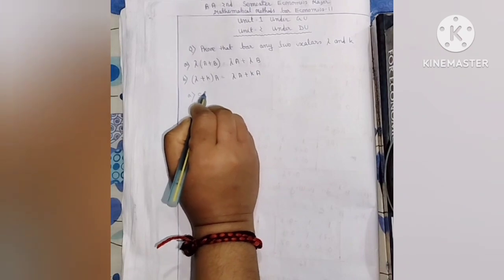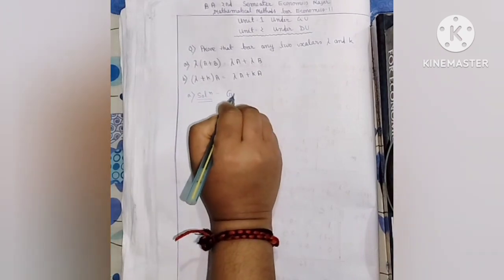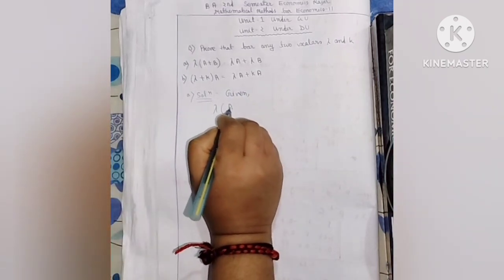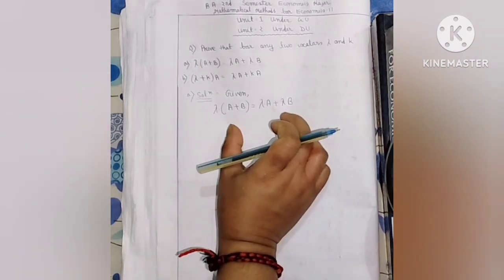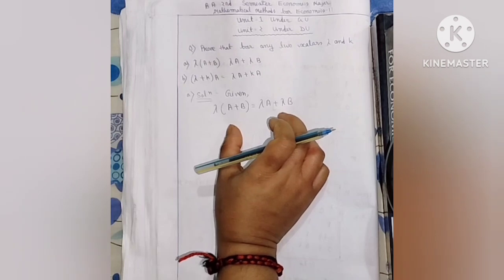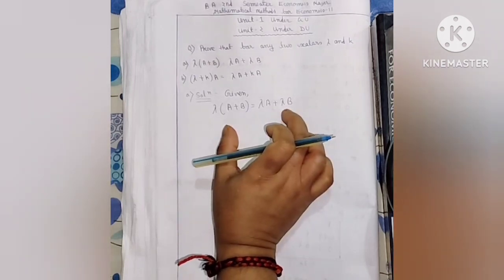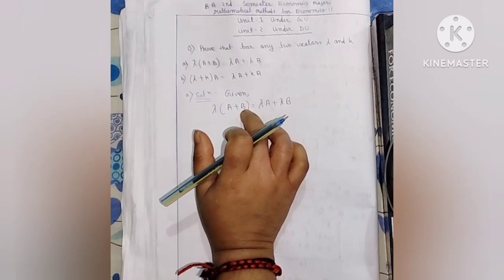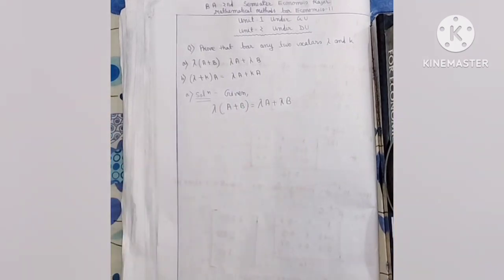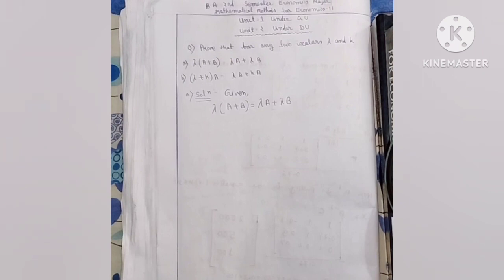Now the special cases. First of all, I will write the entire question. Given, among the two ways, the key is lambda times A plus B equals lambda A plus lambda B. Lambda A plus lambda B — we will detail this. It is the matrix variable, working through A and B as matrices.